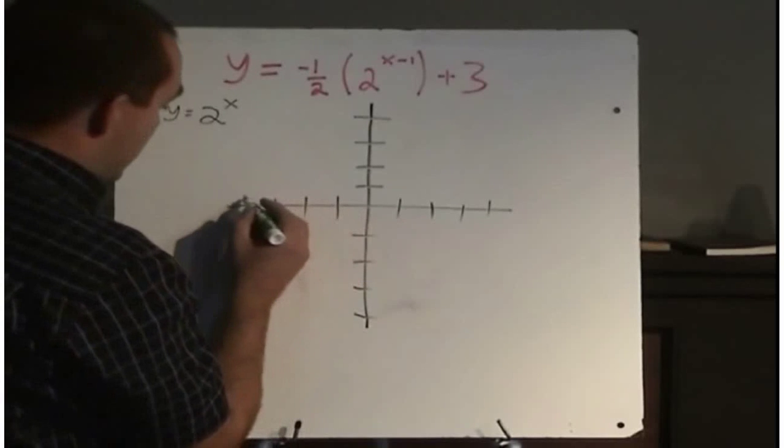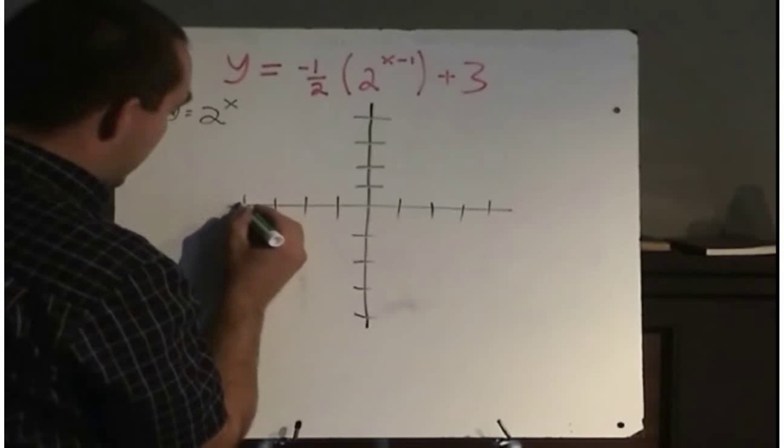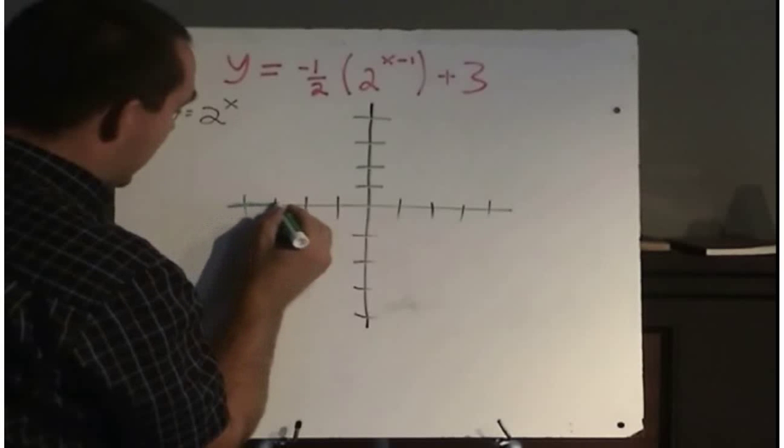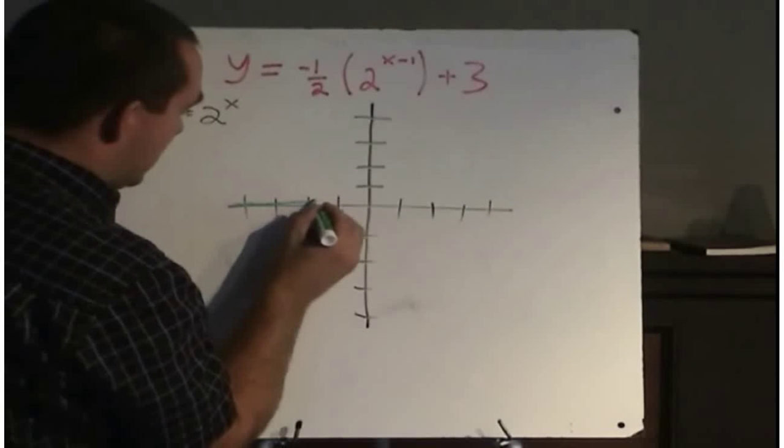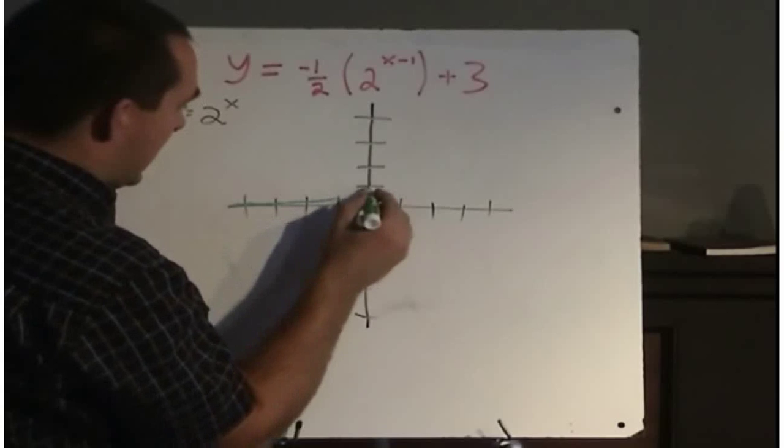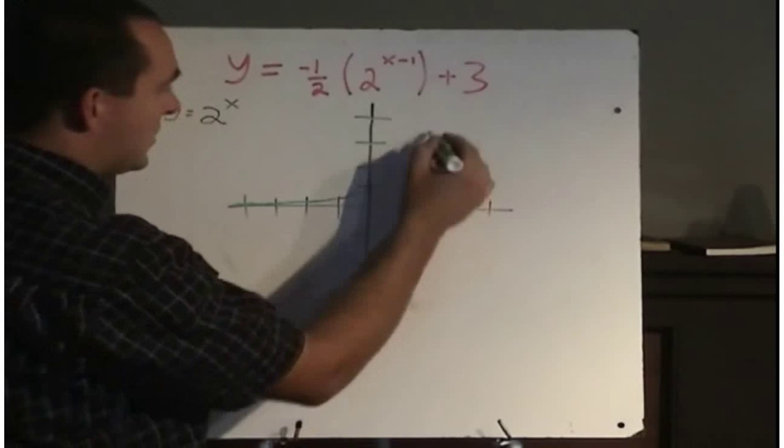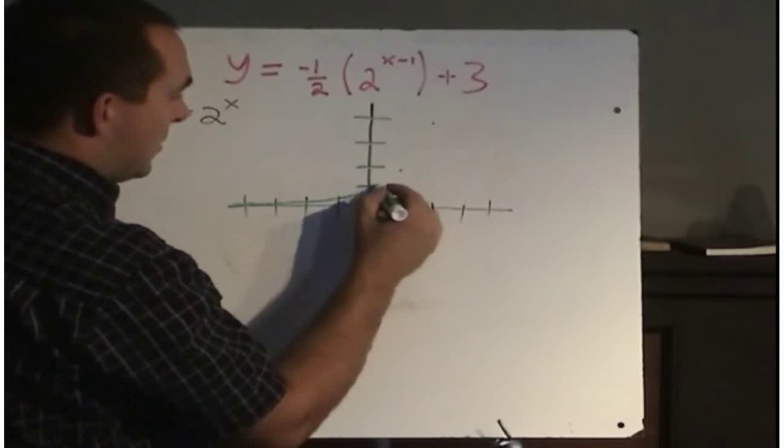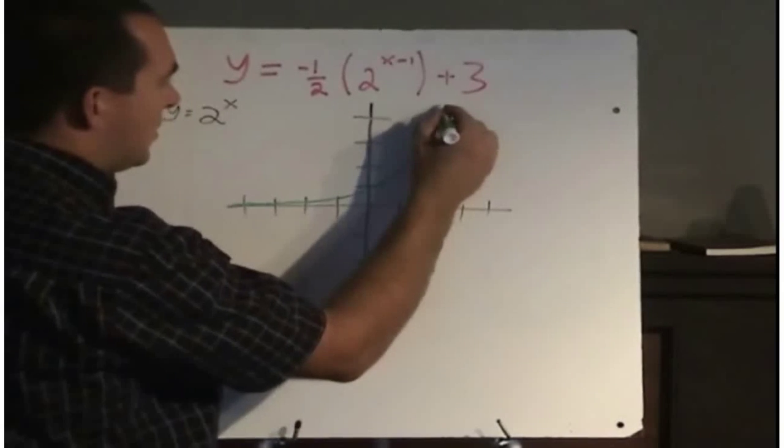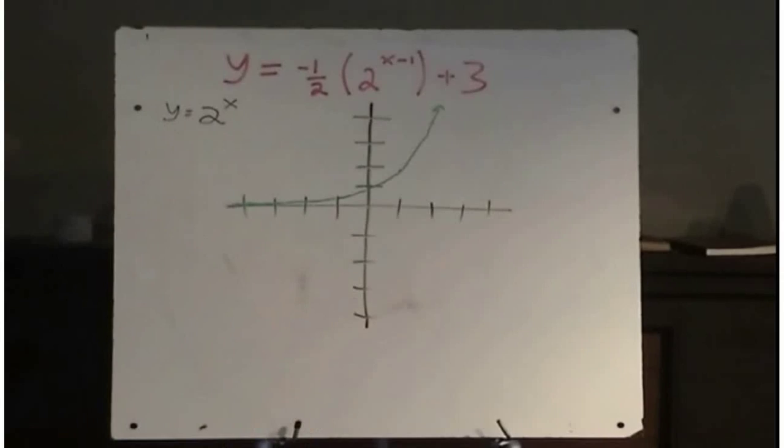We should know our basic graph of y equals 2 to the x comes along our x-axis, goes through the point of one-half, goes through this point here, and then when x is 1, y is 2, and x is 2, y is 4. So there's our basic graph, y equals 2 to the power of x.